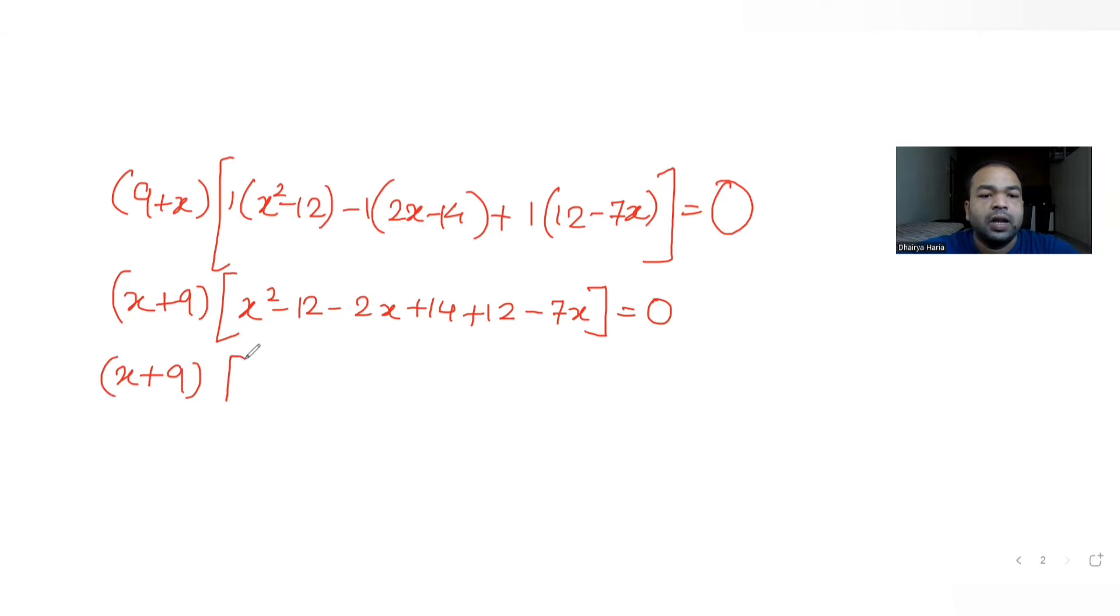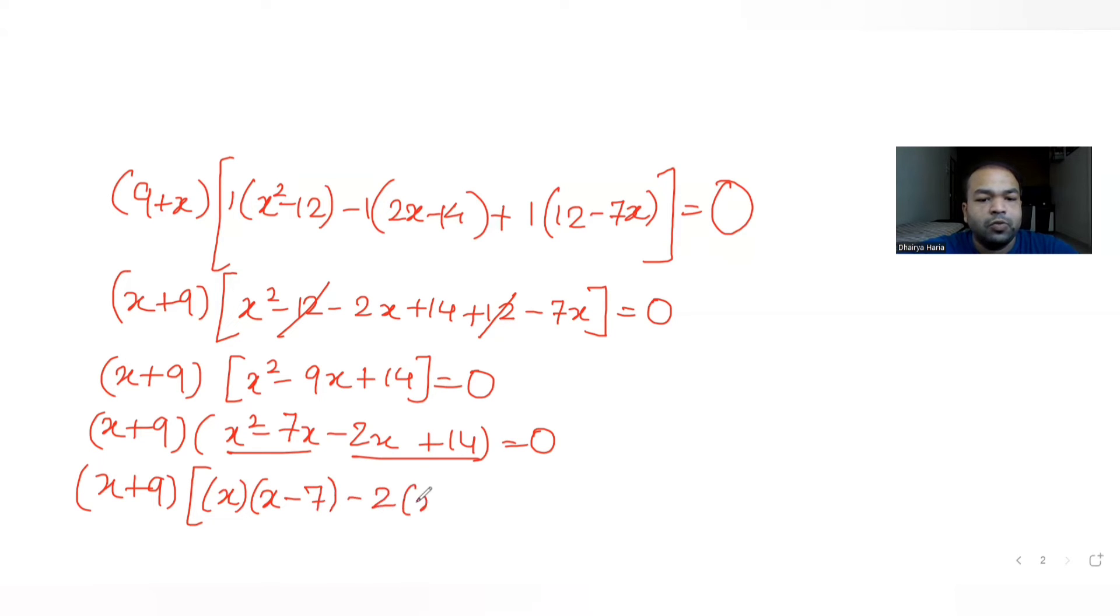If I further solve, I get x plus 9, and here I get minus 12 and plus 12 gets cancelled, so I get x squared minus 9x plus 14 equals 0. So if I further solve this, I get x plus 9, and if I further try to solve this quadratic equation, I can split this quadratic as 7x and 2x. So minus 7x minus 2x plus 14 equals 0. If I further solve this, I can write this as x plus 9, this is x common, x minus 7, minus 2, x minus 7 equals 0. So I get this as x plus 9, x minus 2, x minus 7 equals 0.